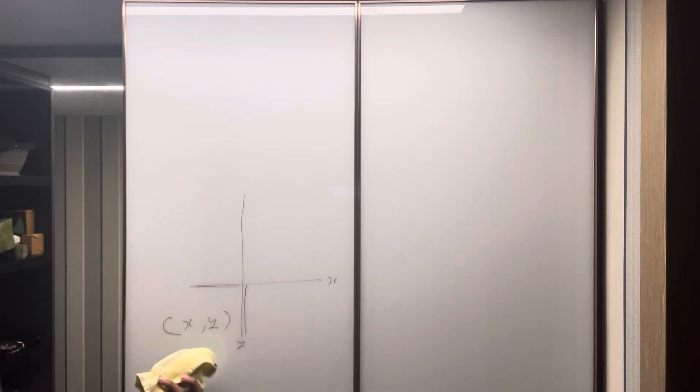X comma y is a coordinate. It's basically how you pinpoint a location over here. Suppose x here we'll keep it as 10 plus 5. The x coordinate here is 5 and y coordinate is 4. Okay, so we take...